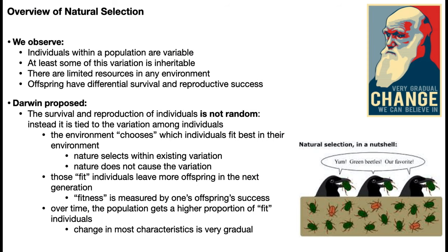The main overview of natural selection: individuals within a population are variable, and at least some of that variation is heritable — as we see through directed breeding. Malthus tells us there are limited resources in any environment, so not every individual born is going to be able to survive. Offspring have differential survival as well as reproductive success. What Darwin proposed from these four facts is that survival and reproduction of individuals isn't random — instead it's tied to the variation among individuals, meaning the environment chooses which individuals fit best in their environment.